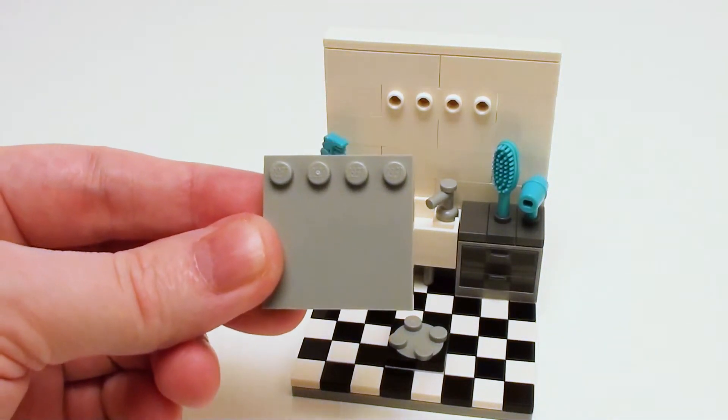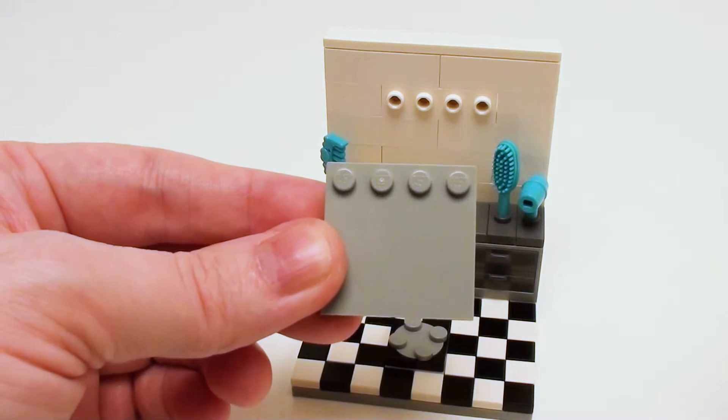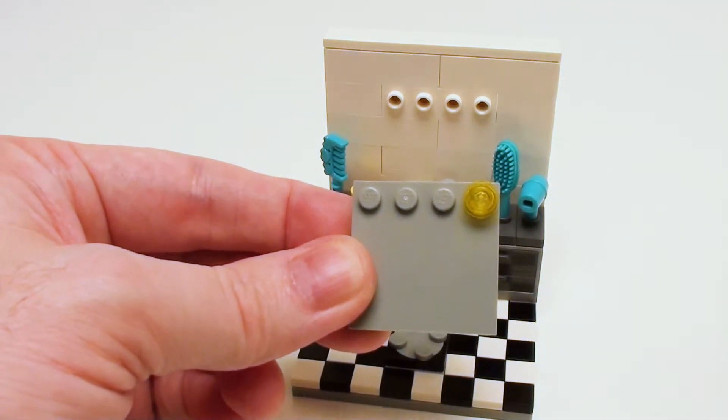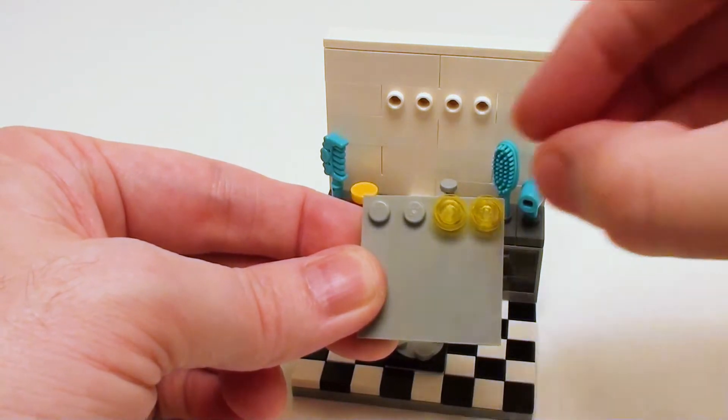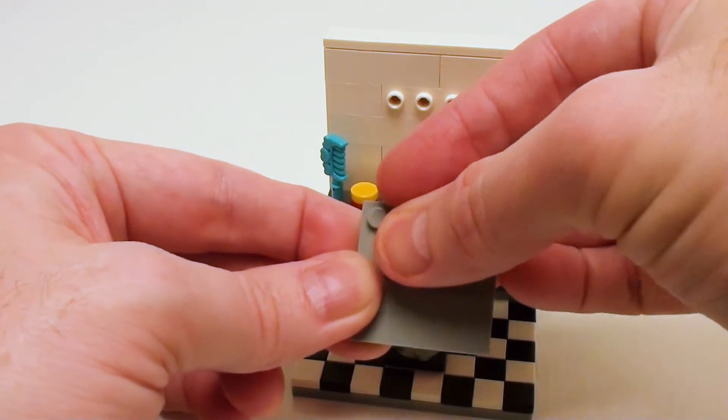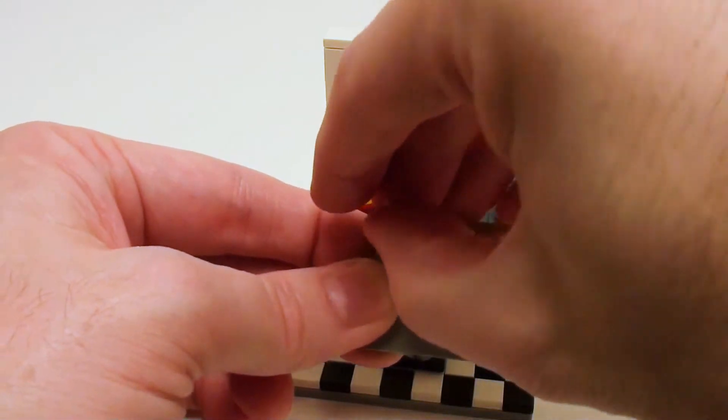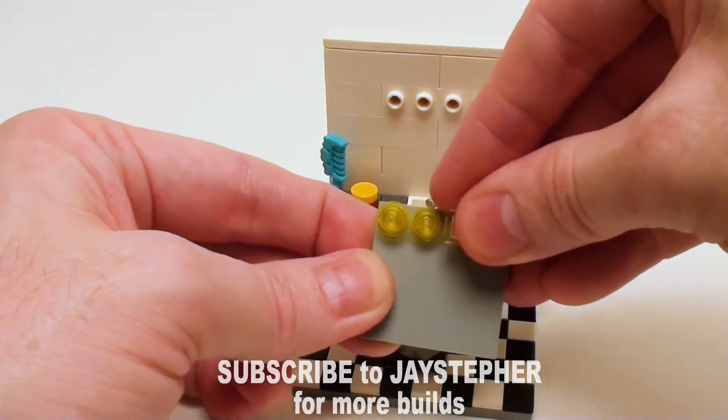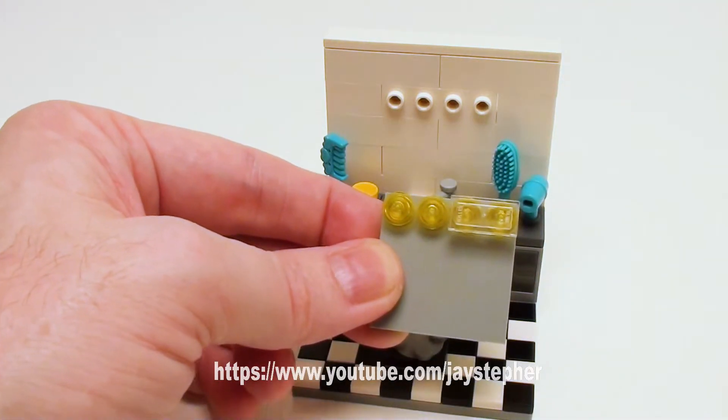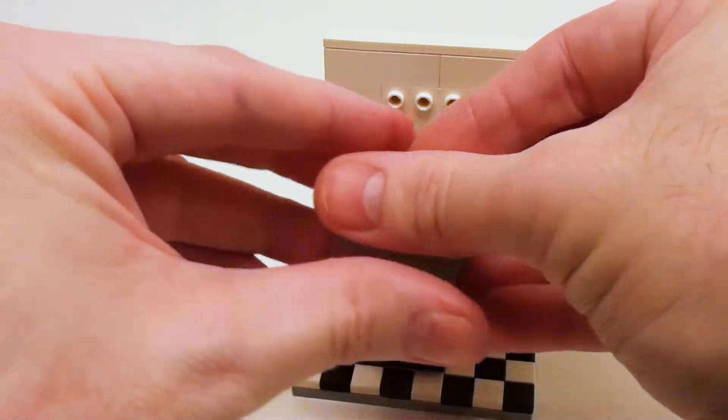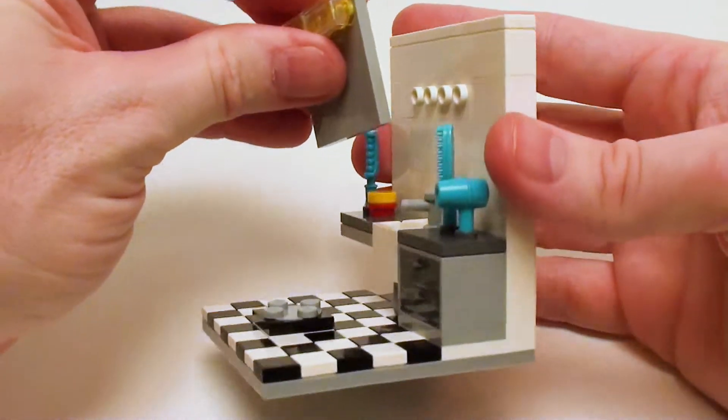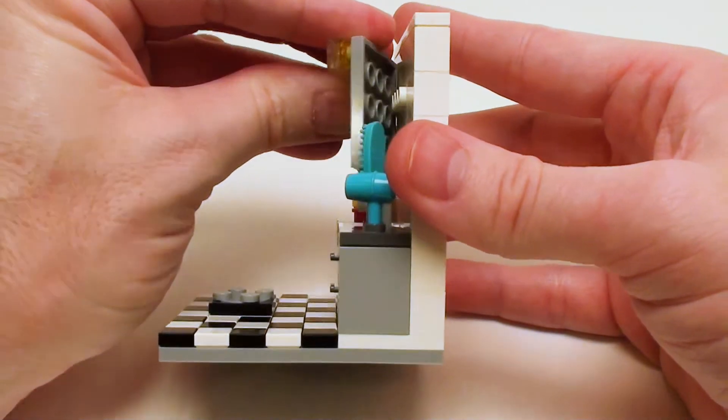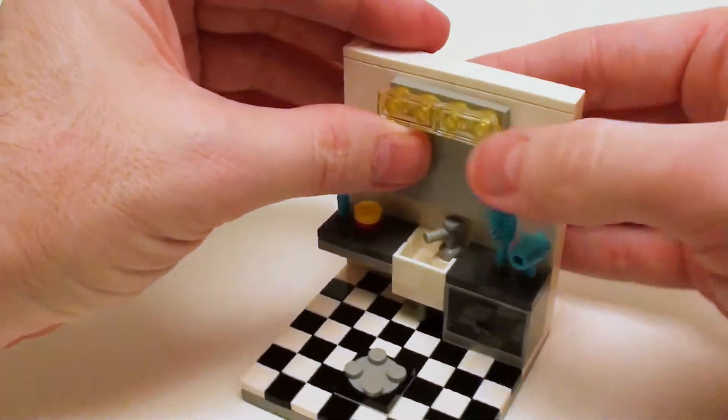For the mirror, take a 4 by 4 modified plate with 4 studs on one side. I'm going to fill these studs in with 4 transparent yellow studs. These are going to act as lights. Then I'm going to crown these off with 2 1 by 2 transparent clear flat tiles. Now attaching the mirror, I'm going to come in here and place it like so. Give it a little bit of an offset.